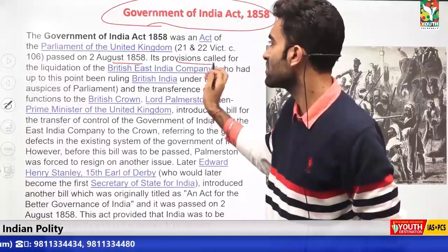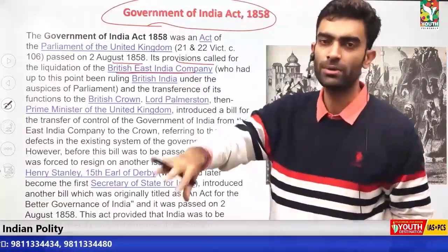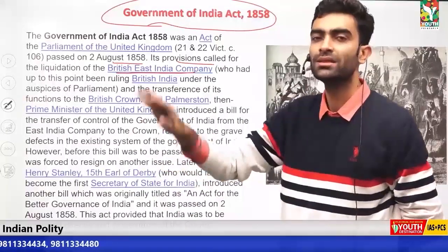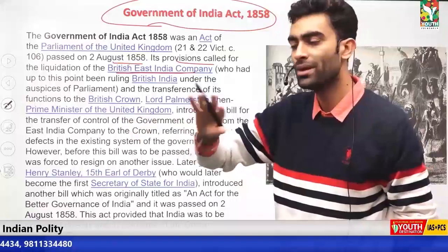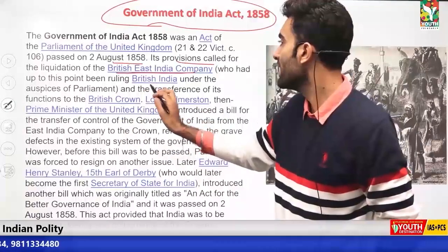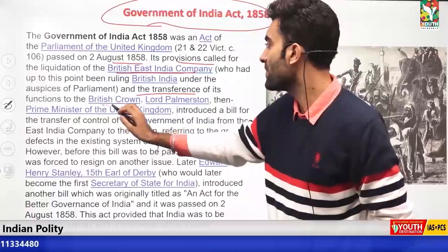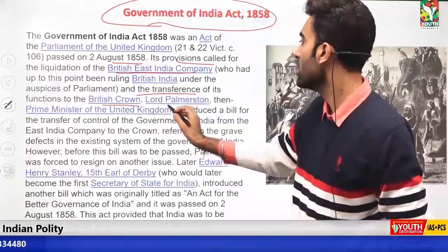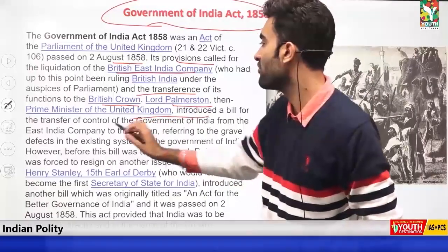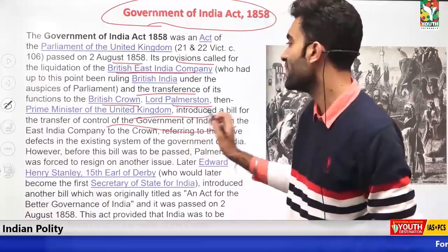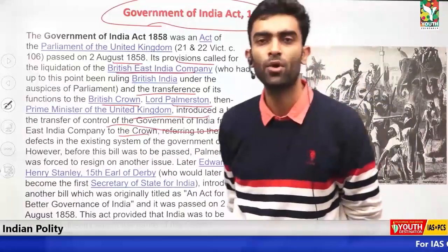Its provisions called for the liquidation of the British East India Company — through this act, the British East India Company was completely removed from India. There was a transference of functions to the British Crown. Lord Palmerston, then Prime Minister of the UK, introduced the bill for the transfer of control of the government of India from the East India Company to the Crown.